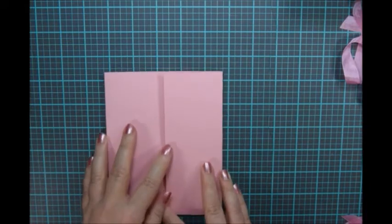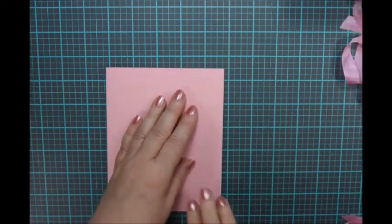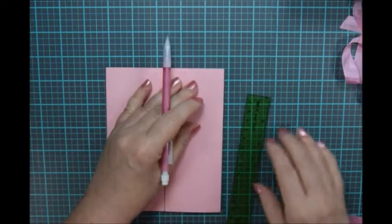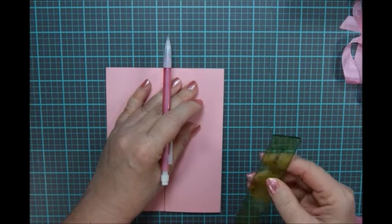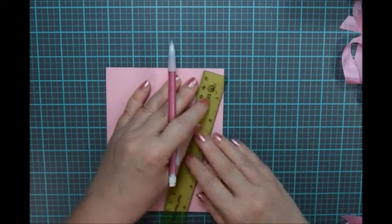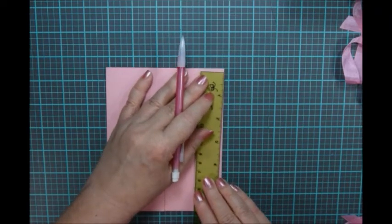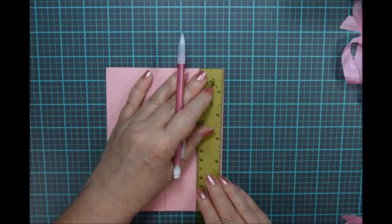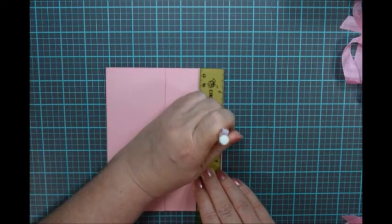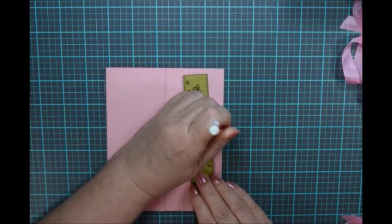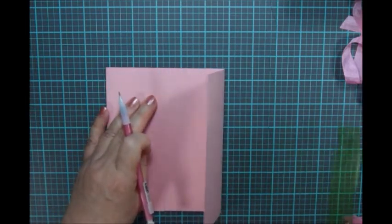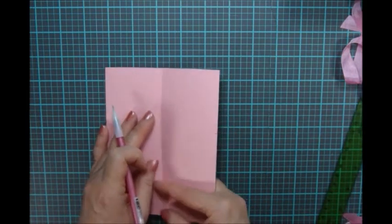And I'm going to make a mark at 2 1/2 inches down. That's about right there. And I'm going to use my paper cutter to make the triangle part of the tent.